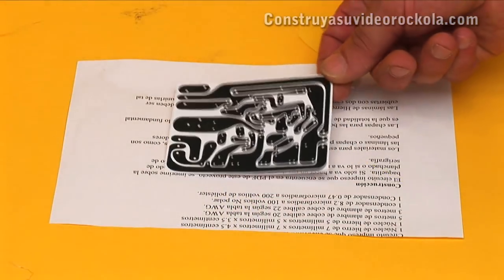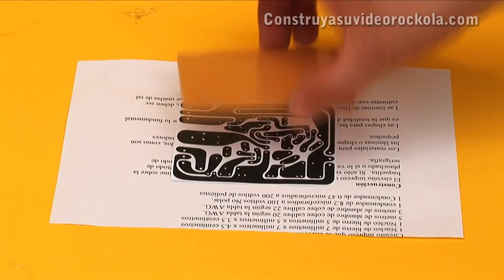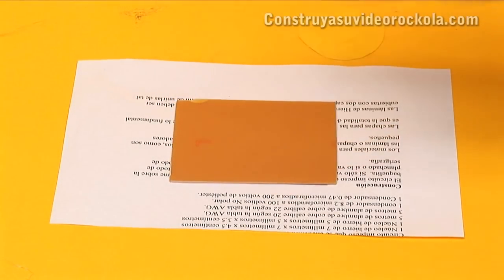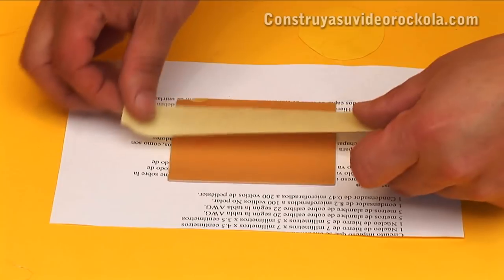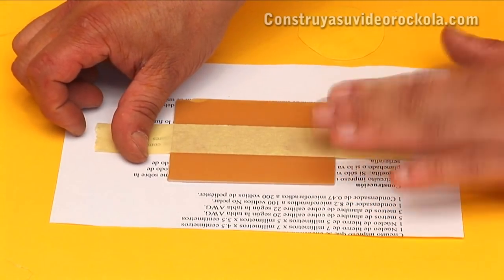We place the printed circuit pattern on a sheet of paper. We put the bakelite virgin over the drawing, facing the drawing with the copper, and we secure paper, drawing, and bakelite with a piece of masking tape.